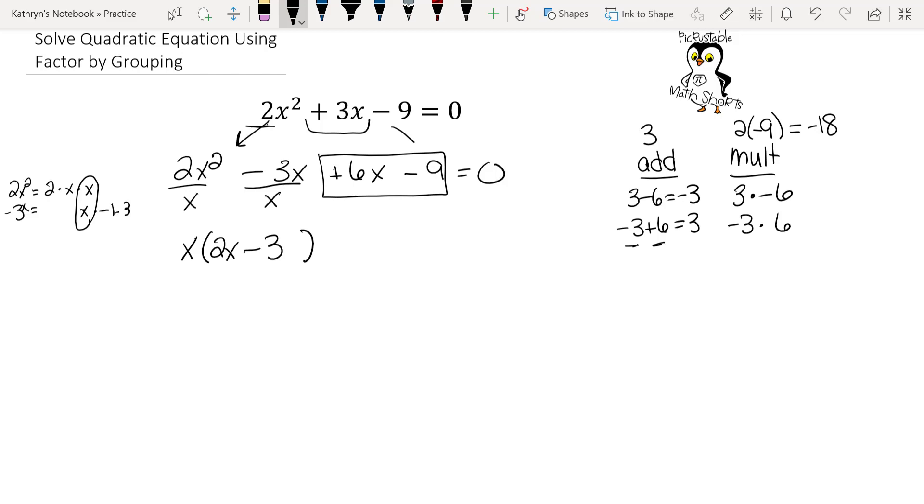Now we need to look at the other side, so we're going to have to do the same thing. So 6x is 2 times 3 times x. Negative 9 is 3 times 3 times negative 1. Now the only thing in common is 3, so 3 is our greatest common factor.